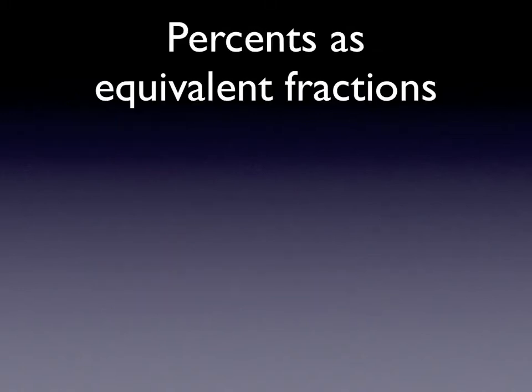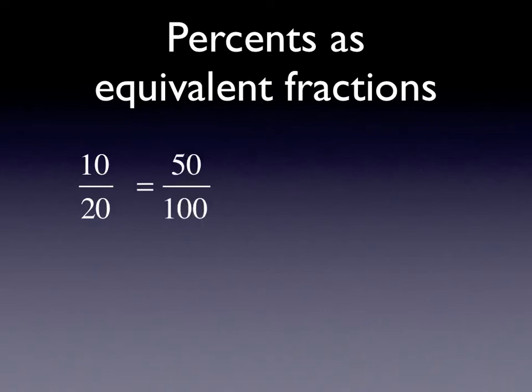We can think of percents as equivalent fractions. What's special about the percent fraction is that it has a denominator of a hundred. For example, here's a fraction ten over twenty. We know that this simplifies to a half, but we can write it as a fraction with a denominator of a hundred. If we write it as an equivalent fraction with a denominator of a hundred, the numerator is fifty — so fifty percent. One half is the same thing as fifty percent. Ten out of every twenty is the same ratio as fifty out of every hundred.